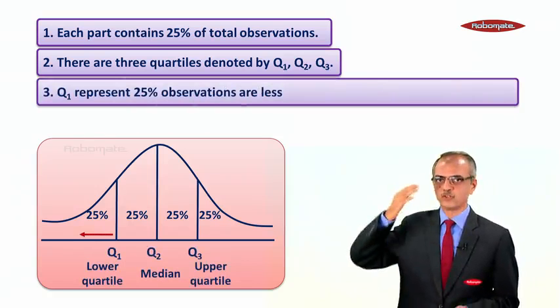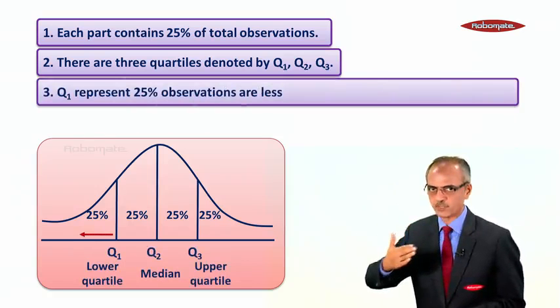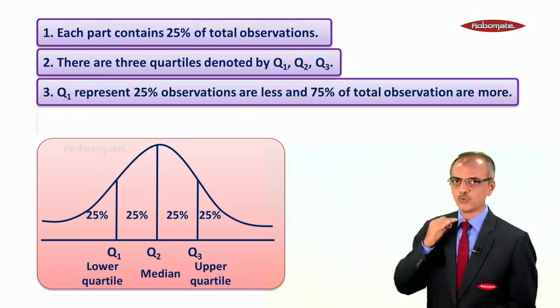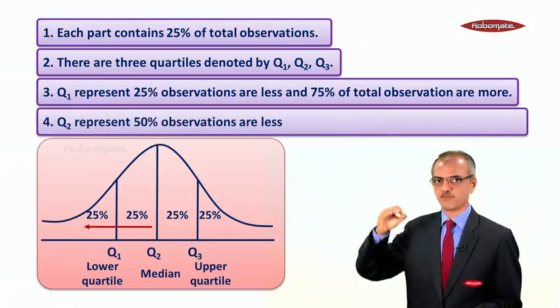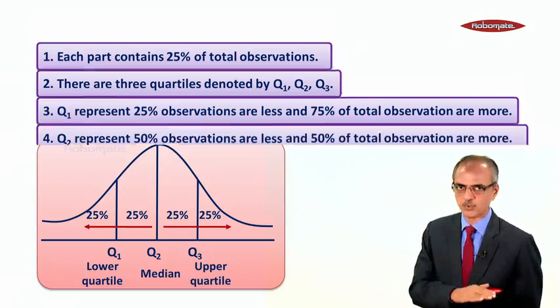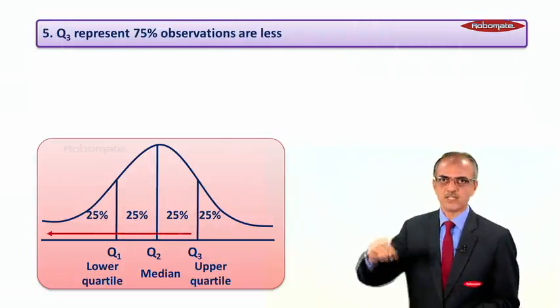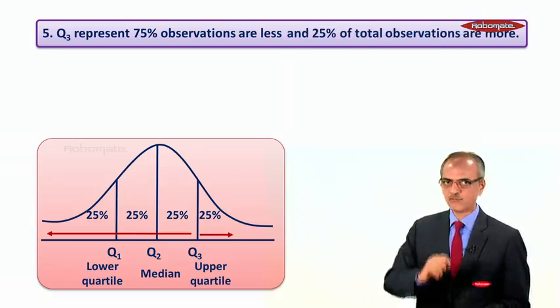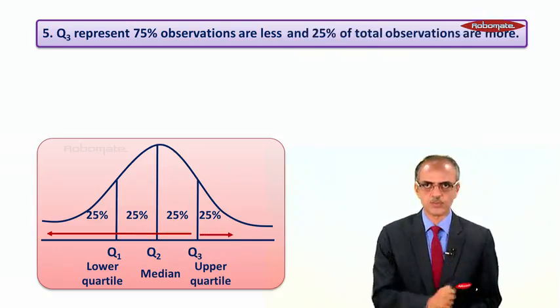The third important point: Q1 represents 25% of the observations are less and 75% of the total observations are more. Q2 represents 50% of the observations are less and 50% are more. Q3 represents 75% of observations are less and 25% of the total observations are more.